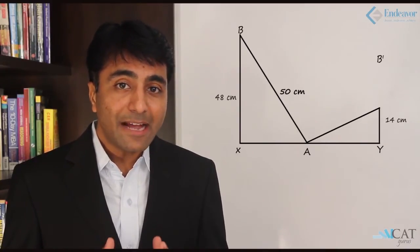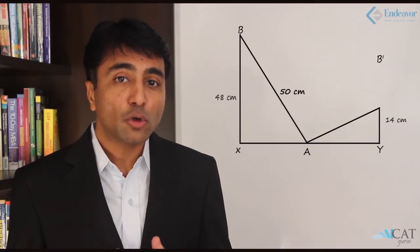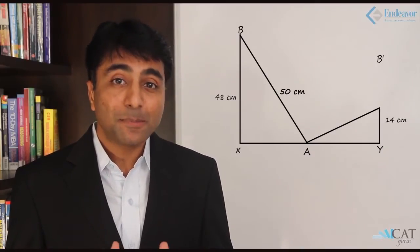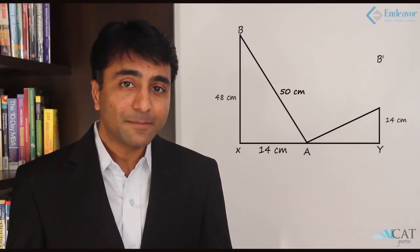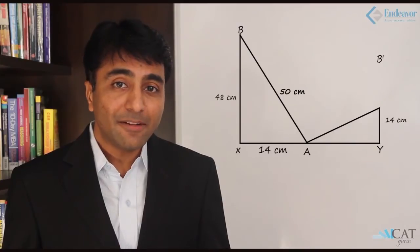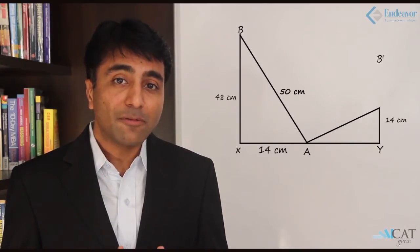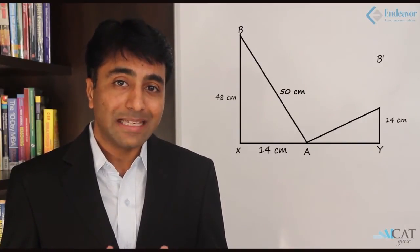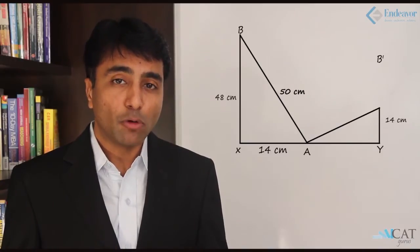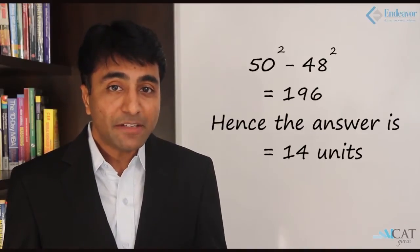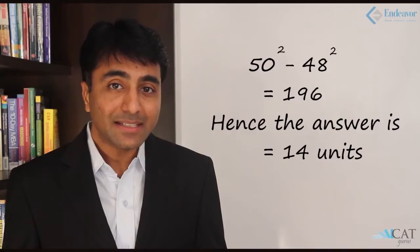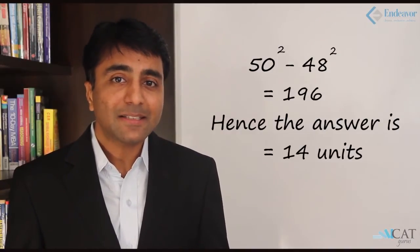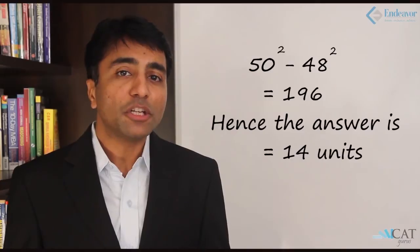Since 48 and 50 are in the ratio 24 : 25, this corresponds to the Pythagorean triplet 7 : 24 : 25, so the base (third side) corresponds to 7 parts. With values 48 and 50, applying the Pythagoras theorem: √(50² − 48²) = √(2500 − 2304) = √196 = 14. Hence the distance from the foot of the wall to the foot of the ladder is 14 units.